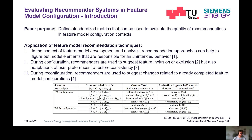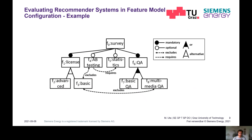Throughout the presentation I will use a running example: a survey software that includes several features. First, there is a mandatory license — either a basic license or an advanced license, chosen alternatively. Also mandatory is the QA or survey module, which can be either a basic QA or a multimedia QA. Optional features are A/B testing and statistics. Constraints include: A/B testing requires statistics, A/B testing excludes the basic license, and the basic license excludes the multimedia QA, and vice versa.